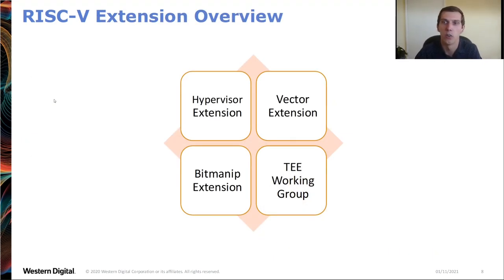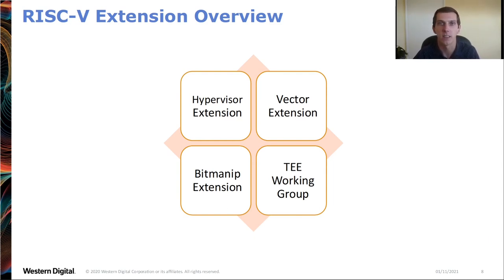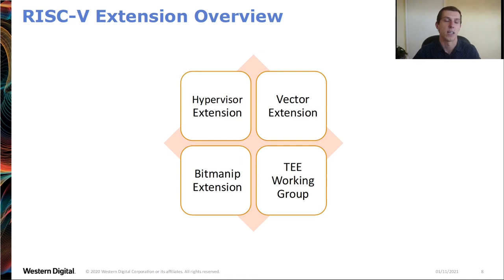On RISC-V extensions: the base ISA is actually very small — just handling addition, loads, and stores — and then extensions are added on top. Multiply, for example, comes from the multiply extension. Extensions have three main states: draft, which is subject to change like an RFC — don't base hardware design on this; frozen, where an extension has two hardware implementations and everyone's happy, after which there's a 45-day freeze period; and ratification, where it's fully endorsed by the RISC-V Foundation.